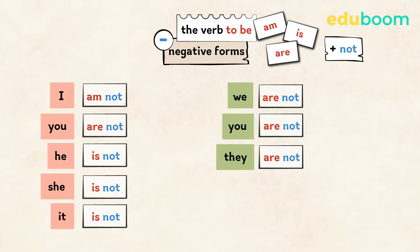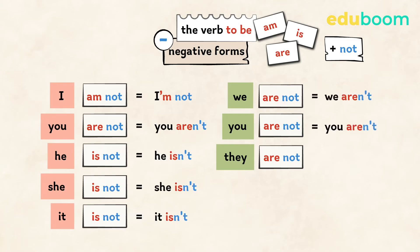And you can also say it shorter. I am not is the same as I'm not. You are not is the same as you aren't. He is not is the same as he isn't. She is not, she isn't. It is not, it isn't. We are not, we aren't. You are not, you aren't. And they are not, they aren't.